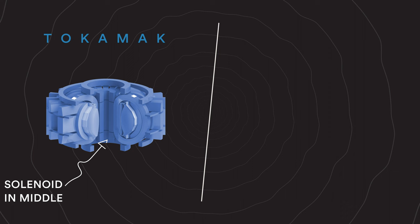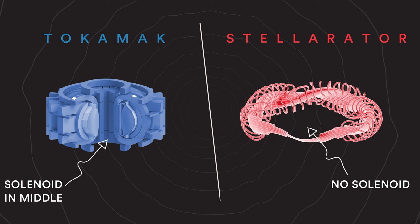On the left side, we have the tokamak, which has a central solenoid and planar electromagnets around the torus. On the right side, we have the stellarator, which does not have a solenoid in the center, but that has electromagnets with a complex 3D shape.